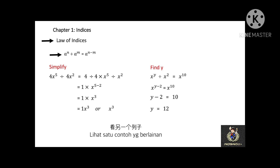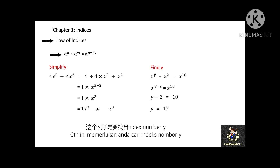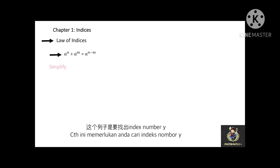Next: x to the power of y divided by x to the power of 2 equals x to the power of 10. In this case, you have to find the index number y. According to the law of indices, this equals x to the power of y minus 2 equals x to the power of 10. By comparison, y minus 2 equals 10, and y equals 12.